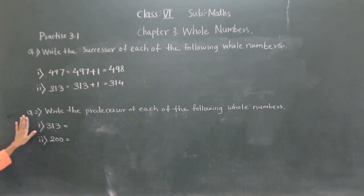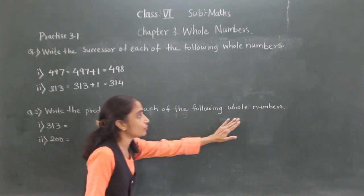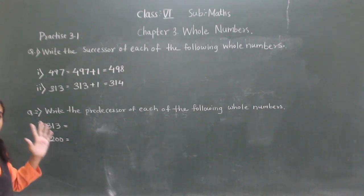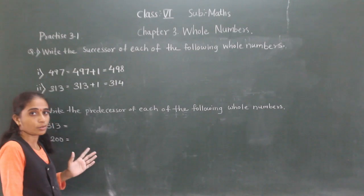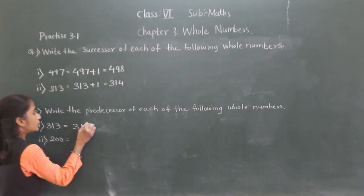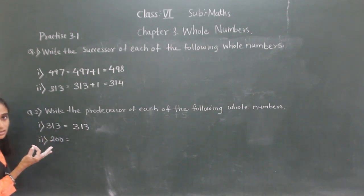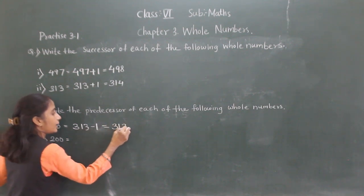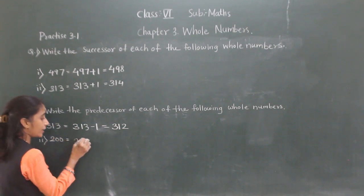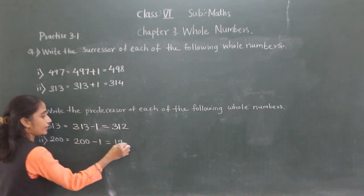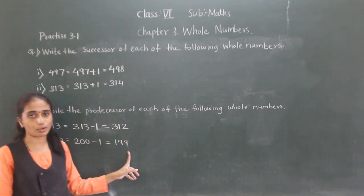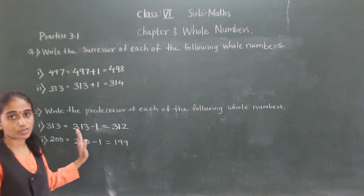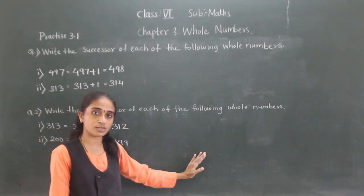Question number 2: write the predecessor of each of the following whole numbers. Predecessor means subtract 1 from the given number, or the number that comes before the given number. For 313, the predecessor is 312 (313 − 1 = 312). For 200, the predecessor is 199.